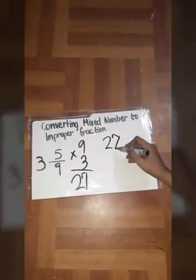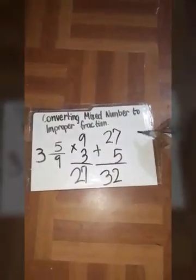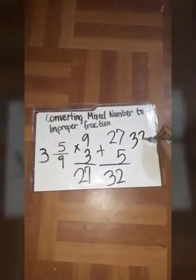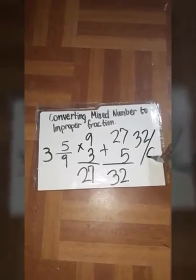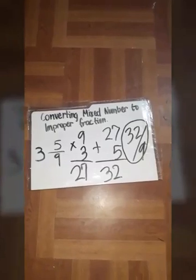So 27 plus 5 equals 32. Now copy your answer and copy your denominator. So now we have the result: 32 over 9.